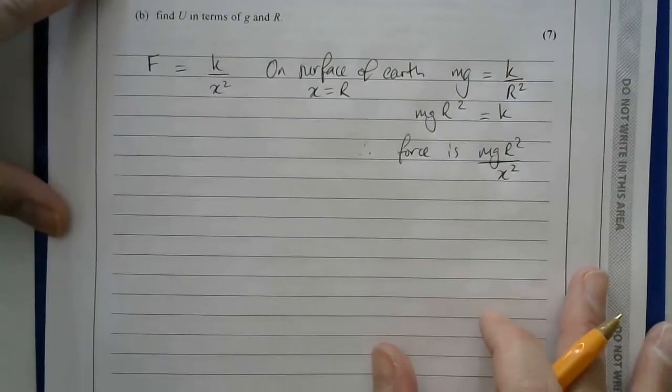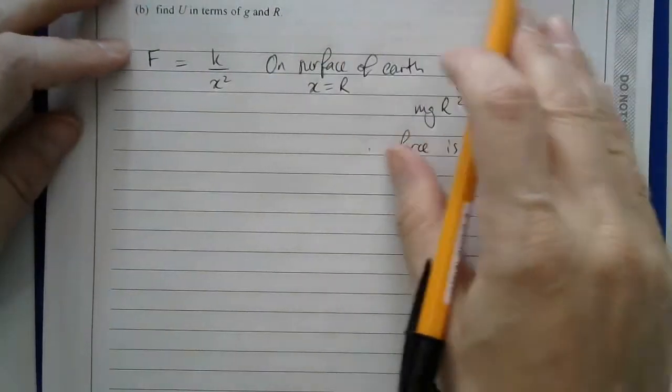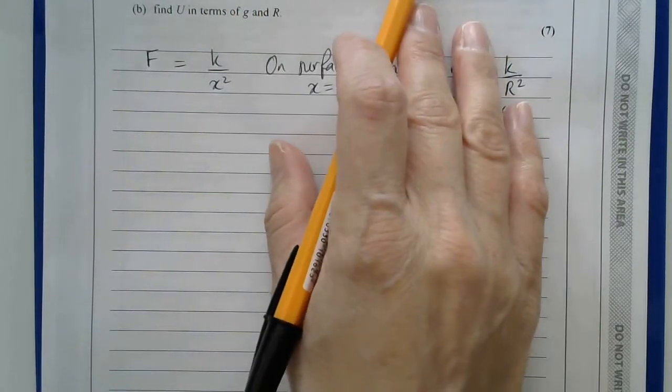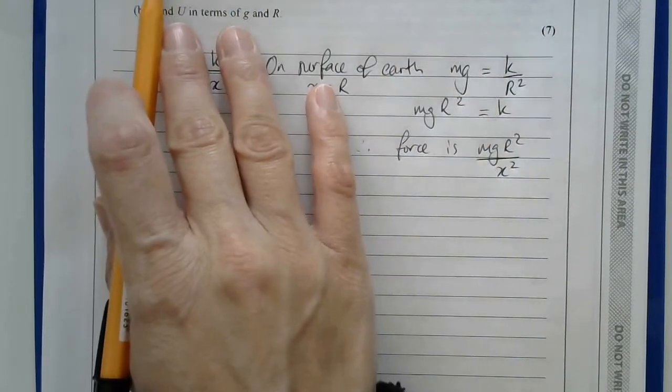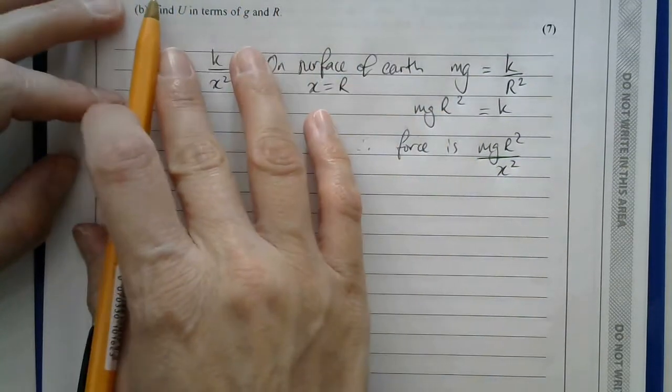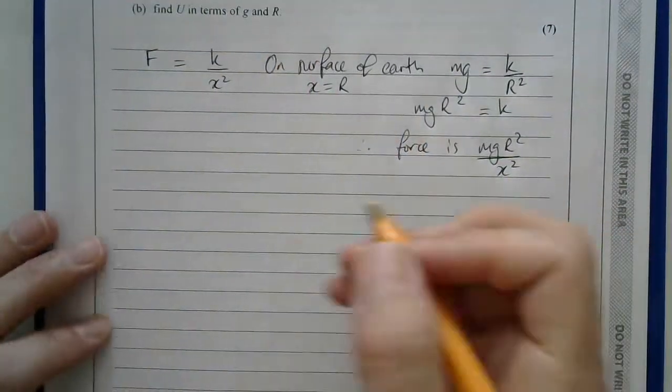Then I'm told that the particle was fired with an initial speed u, and the greatest height above the surface of the Earth reached by p is this. And remember, whenever you have a greatest height problem, it means that the velocity is zero. So given that air resistance can be ignored, find u in terms of g and r.